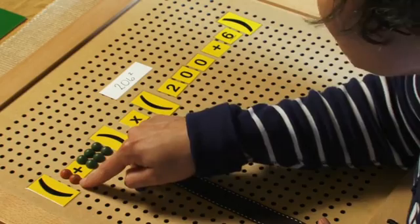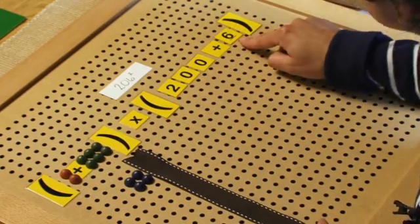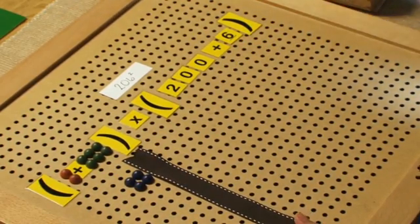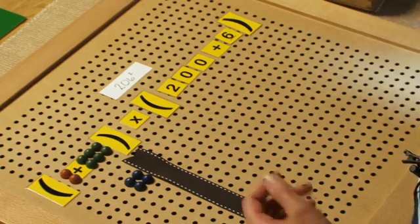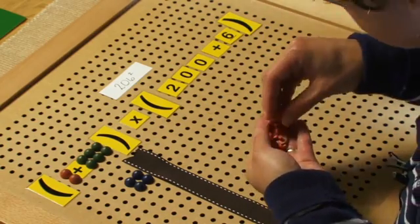So we go back to the hundreds. We have 200 times 6, which is 1,200. We can represent that with 1,200 pegs.